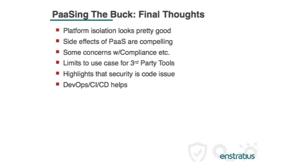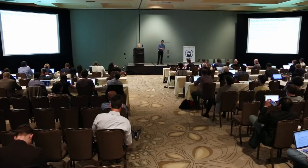My final takeaways: platform isolation looks pretty good — are there security issues? Sure. But are they enough to warrant applying a lot of extra controls? No, not really. There are easier ways for people to break stuff, so don't add complexity and don't worry about it. The side effects of PaaS are really compelling — we're all here because we agree on that. Be careful when dealing with compliance — that's a big one, that's where you can get bit. On the public PaaS side, you're very limited on third-party tools, so take that into careful consideration. Remember that the place to put a lot of effort is not in third-party tools, but in making sure your code is solid to begin with. And tools and concepts like DevOps, continuous integration, and continuous deployment really help a lot.